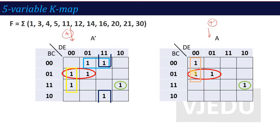After overlapping pairing, you treat each 4-variable K-map individually. The remaining min terms are paired within the 4-variable K-map as usual. This is why 4-variable K-map expertise is essential — तभी हम 5-variable K-map को easily calculate कर पाते हैं। In the first K-map, the remaining ones are paired: one pair is formed from two adjacent ones, and a single one connects with its adjacent one above.